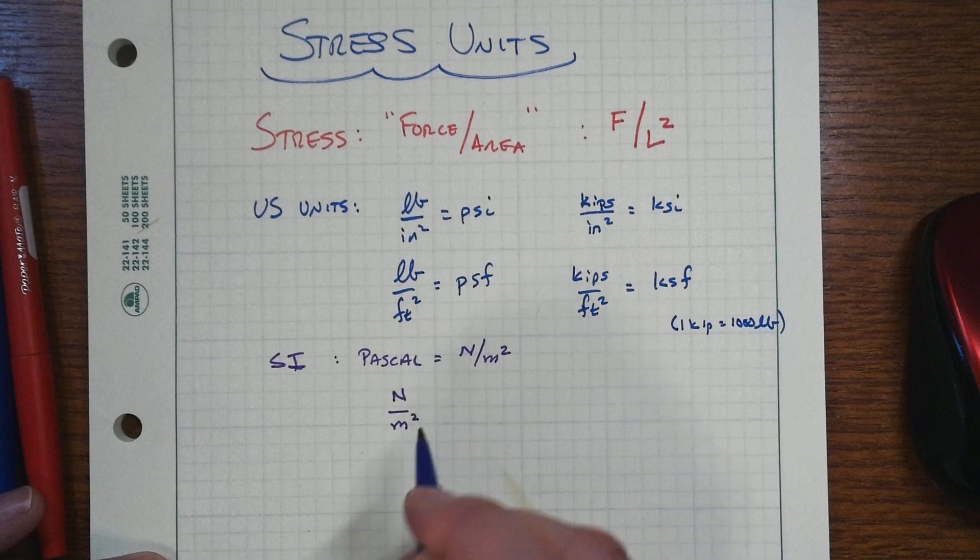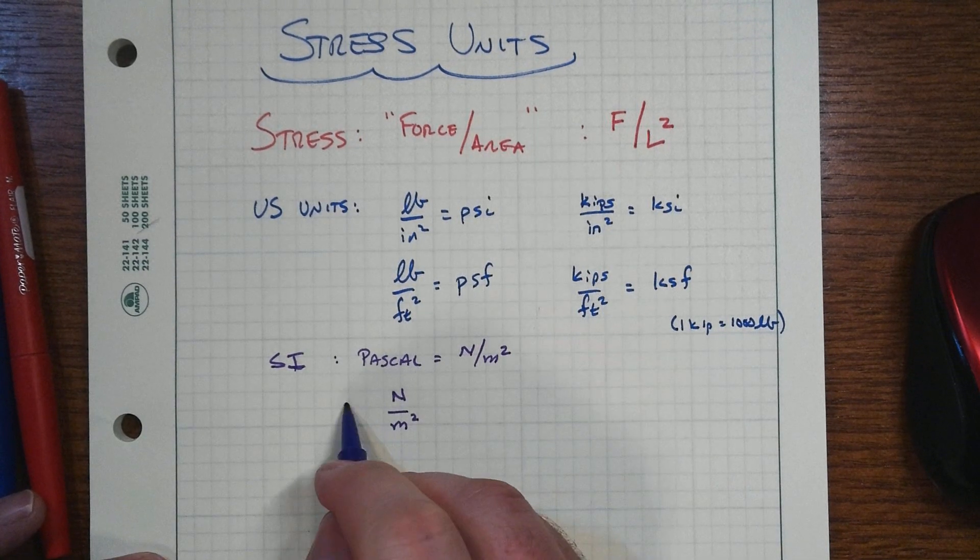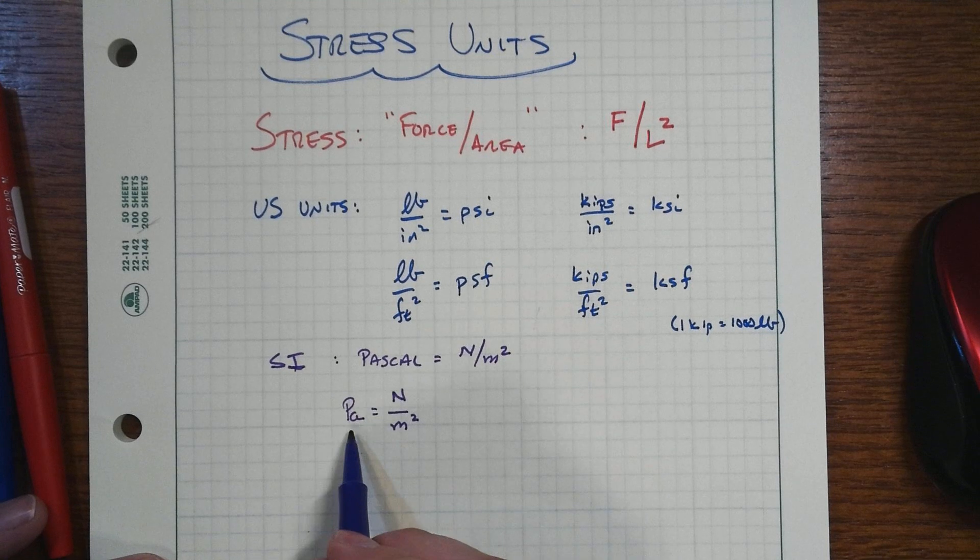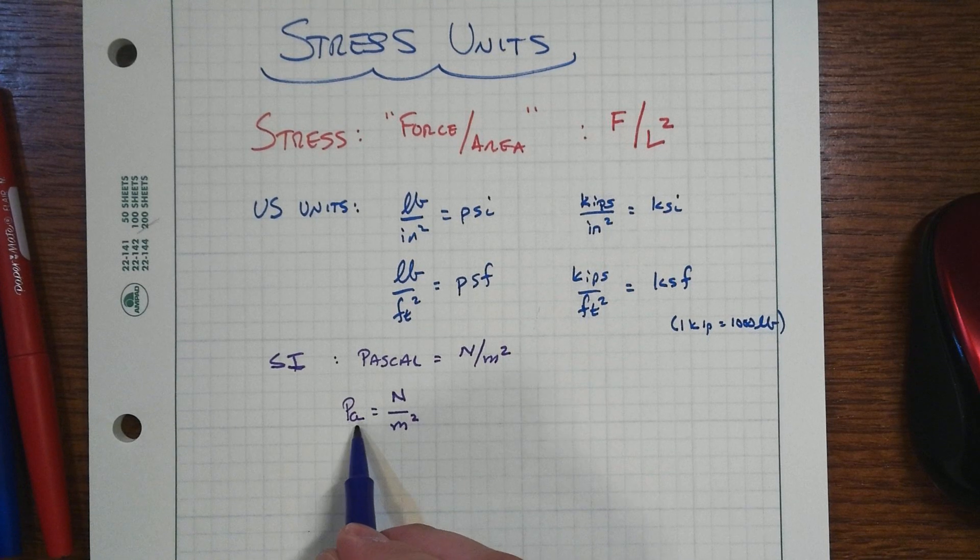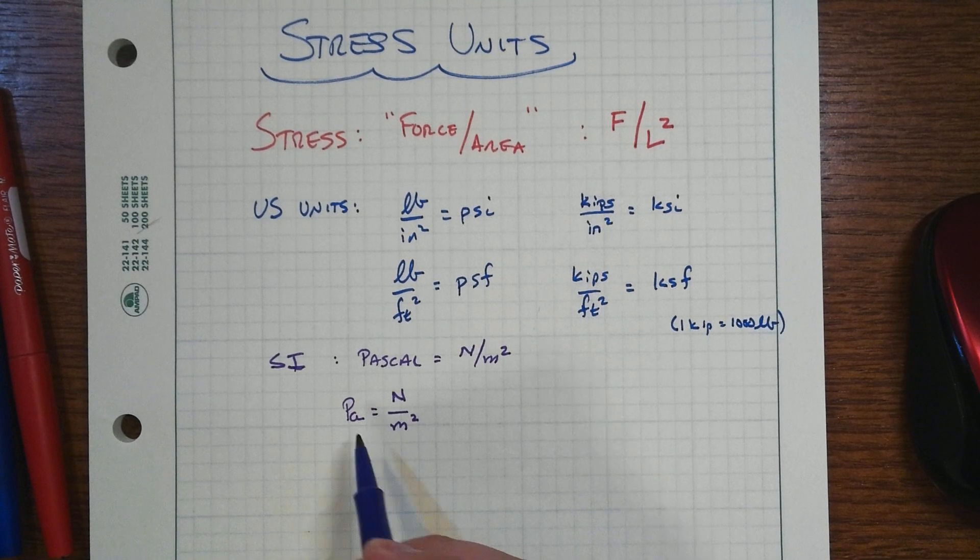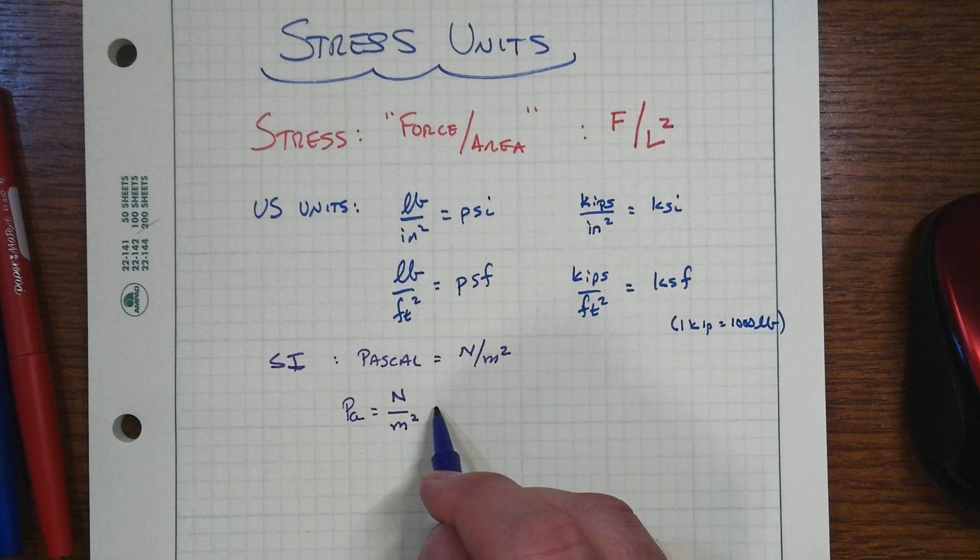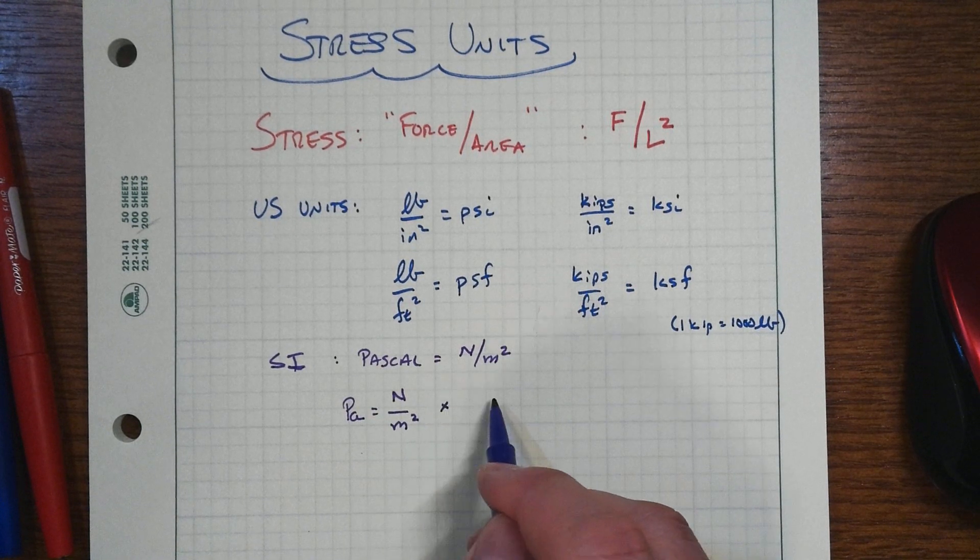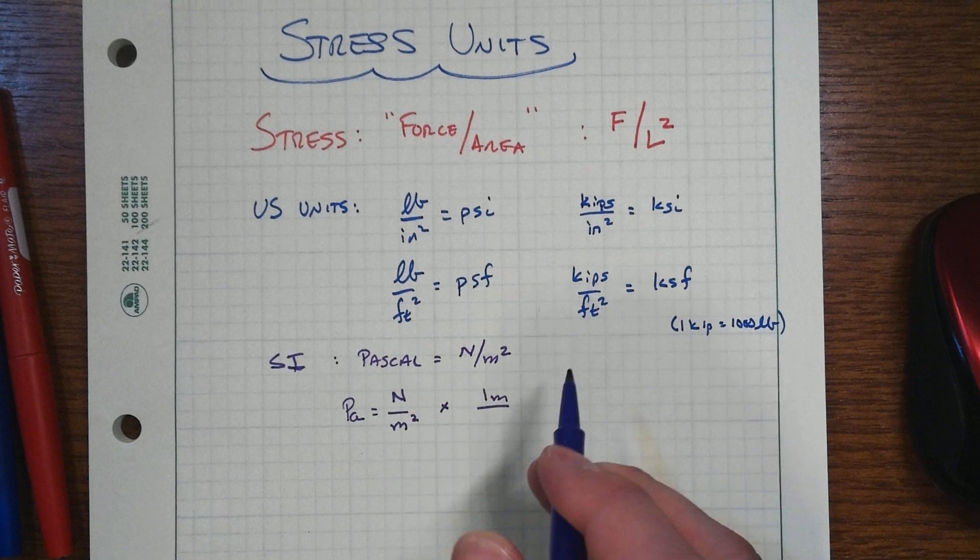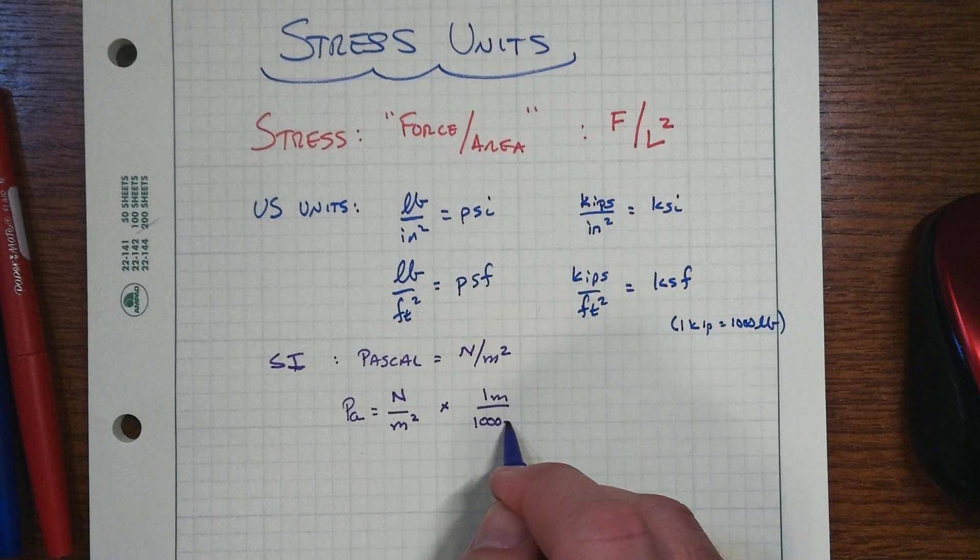All right, so a newton per square meter is the Pascal. We'll usually abbreviate that as capital P, lowercase a. Sometimes people will do it as little p, little a. But that's probably the most common way that you'll see it. And let's consider that in one meter, there is 1,000 millimeters.